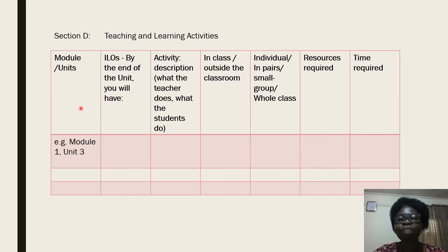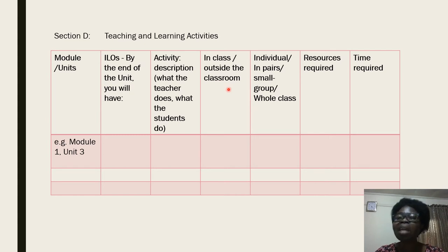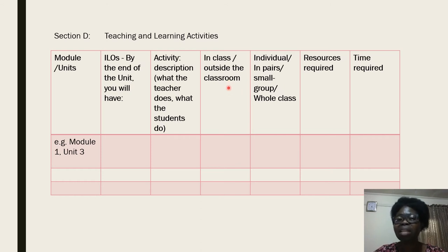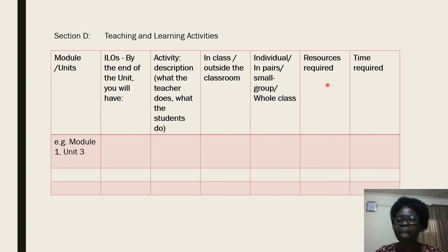You then continue to look at the activity itself — how you will conduct it. Is it within the course or outside the course? Because it's an online course, we're not looking at a physical classroom. The activity could be taken away as an assignment for students to submit, or you could create a discussion forum for them to complete it. Then decide whether it will be individual or group-based. If you select the resources carefully here, you will discover you can avoid plagiarism entirely.